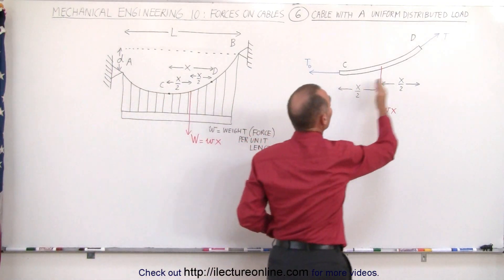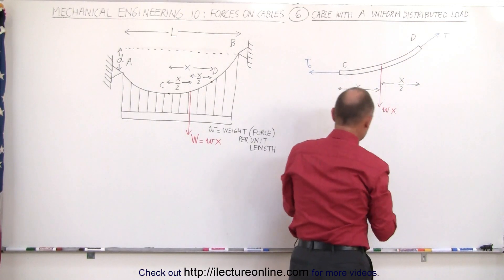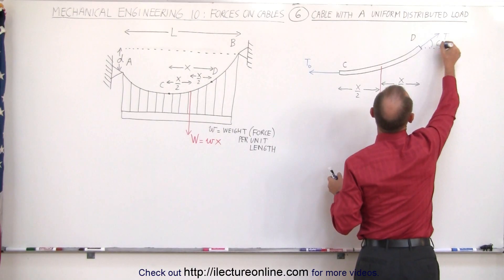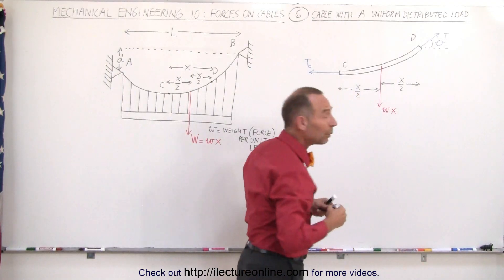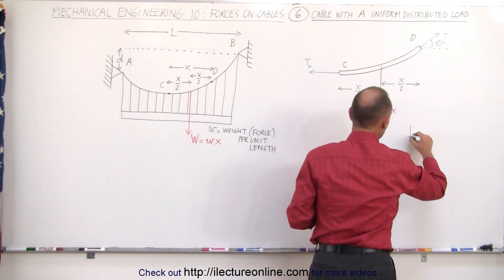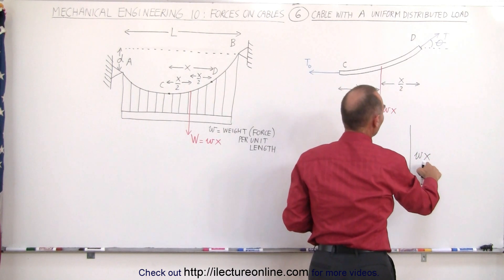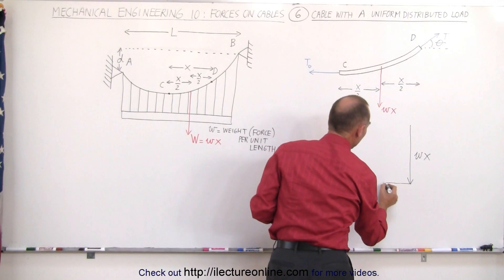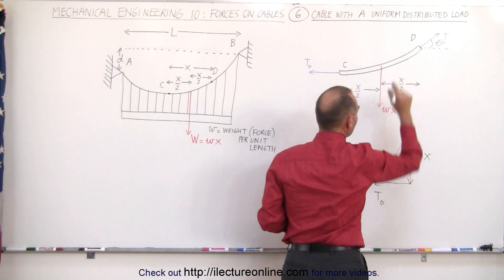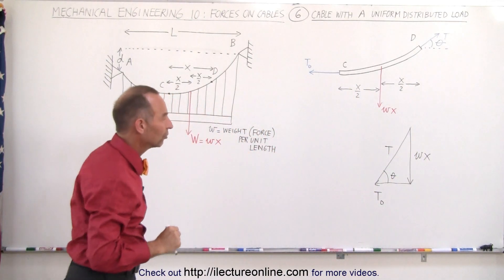We can then calculate the tension anywhere else in the cable by knowing the length of the section and the angle at that point. Let's label that angle as theta. What we're going to do is draw a triangle of those three forces: W times X (the weight per unit length times the distance X), the horizontal component of the tension T0, and the tension T in that cable section. Theta is the angle between the horizontal and the direction of the cable at point D.